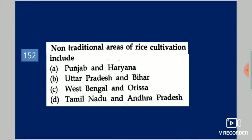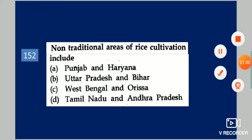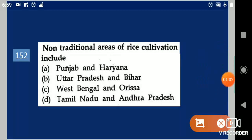Next question: Non-traditional areas of rice cultivation include dash. Your options are: Punjab and Haryana, UP and Bihar, West Bengal and Odisha, Tamil Nadu and Andhra Pradesh. Your answer is Punjab and Haryana.